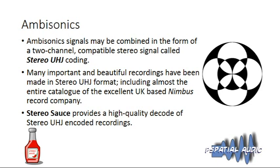As far as Stereo Source is concerned, the aspect we're keen to support is Stereo UHJ. Ambisonic signals can be encoded to a compatible stereo format called Stereo UHJ, and there is a huge catalog of such recordings — mainly because UK record company Nimbus recorded virtually all their catalog in this format for the last 30 years. There are hundreds if not thousands of CDs available, often of very great artistic merit.